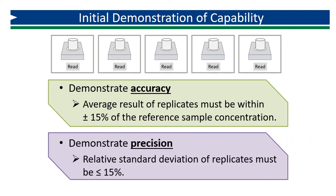Precision is assessed by calculating the relative standard deviation of the five replicates. The relative standard deviation must be less than or equal to 15%. DEP's record-keeping form for the GRAB method IDC contains tables and formulas to walk you through all of the calculations to complete the demonstration of accuracy and precision.